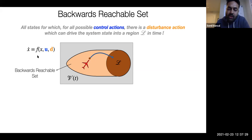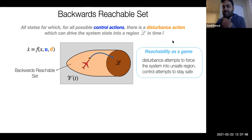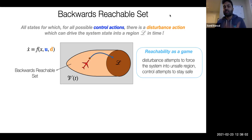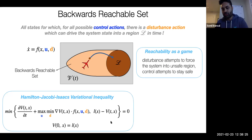In Hamilton-Jacobi Reachability, the autonomous system is represented as a dynamical system with dynamics F, state X, control U, and disturbance D. The evolution over time is represented by an ordinary differential equation — the dynamics of the system. Given these dynamics, we set up a game between the disturbance and the control, where the disturbance attempts to push the system inside the unsafe region while the control attempts to keep the system safe. The solution to this game can be found using the principle of dynamic programming, which results in the Hamilton-Jacobi-Isaacs variational inequality.